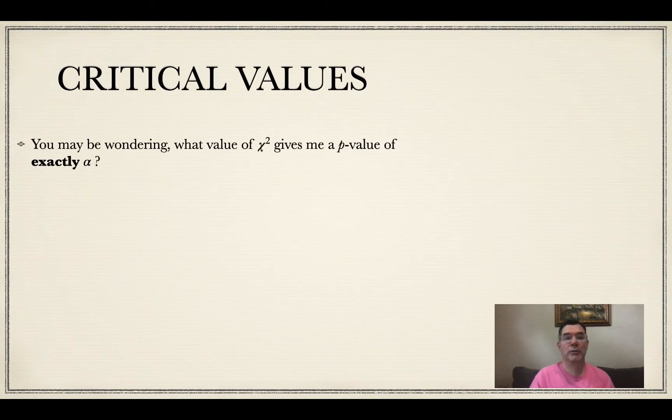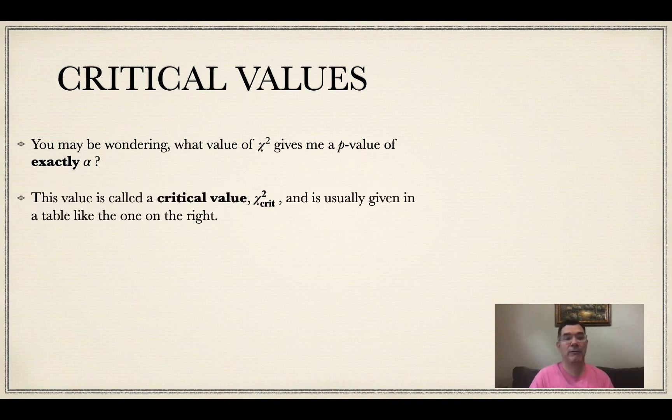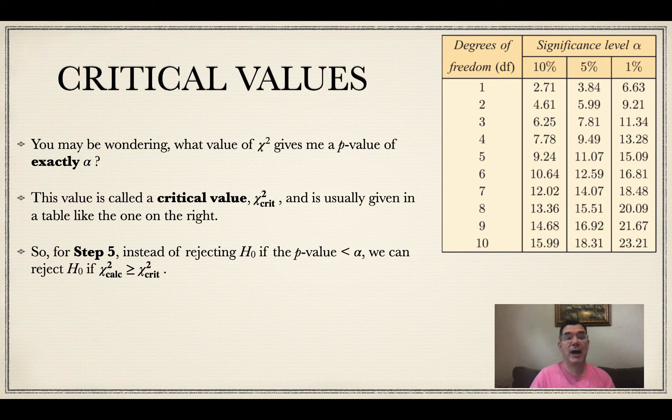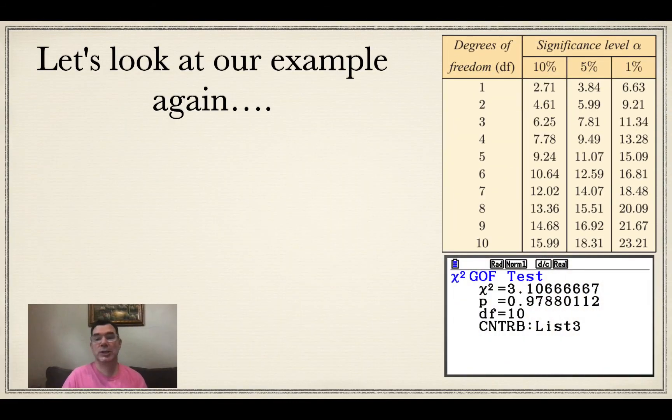So let's talk about critical values for a second. You may be wondering what value of chi-squared gives me a p-value of exactly alpha. Well, that's called a critical chi-squared value. And so you're usually given a table like this one if you don't have a calculator or even if you do. So for step five, instead of rejecting the null hypothesis if the p-value is less than my alpha value, I can also reject it if my calculated chi-squared value is greater than or equal to my critical chi-squared value that the table gives me. So let's look at this again.